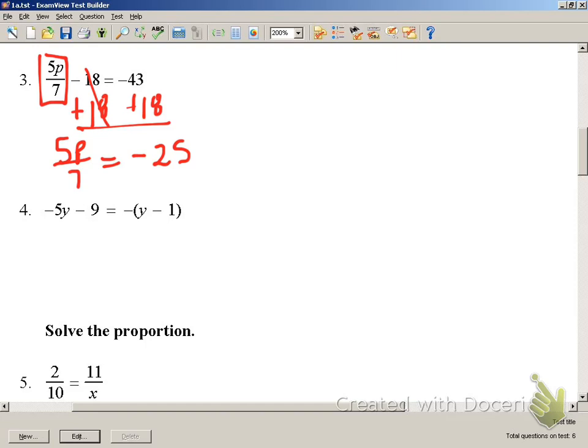In order to solve for P, I am going to get rid of the 7 on the bottom by multiplying. It will cancel here. I have to multiply there.